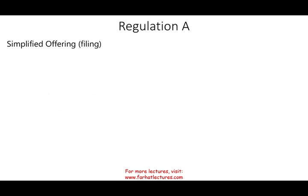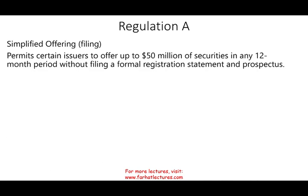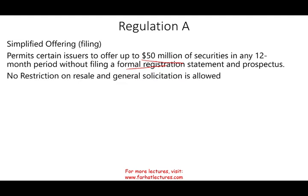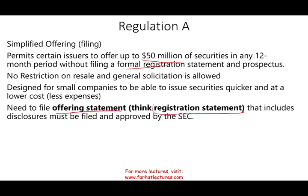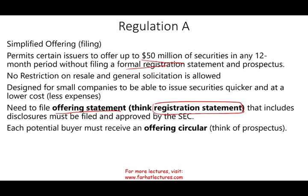Regulation A — it's not really an exemption, but rather a simplified offering. It permits certain issuers to offer up to $50 million of securities in a 12-month period without filing a formal registration statement and prospectus. It doesn't mean you don't have to file anything — you will file something, but it's not as comprehensive and tedious as a registration statement and prospectus. There's no restriction on resale, and general solicitation is allowed.